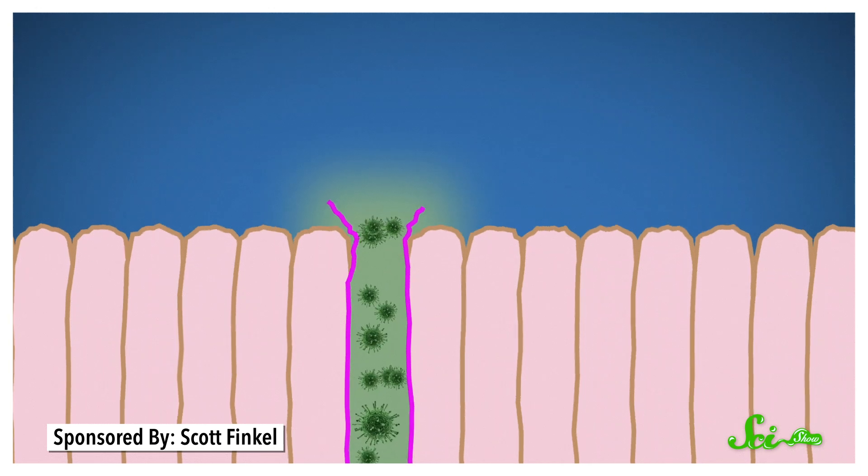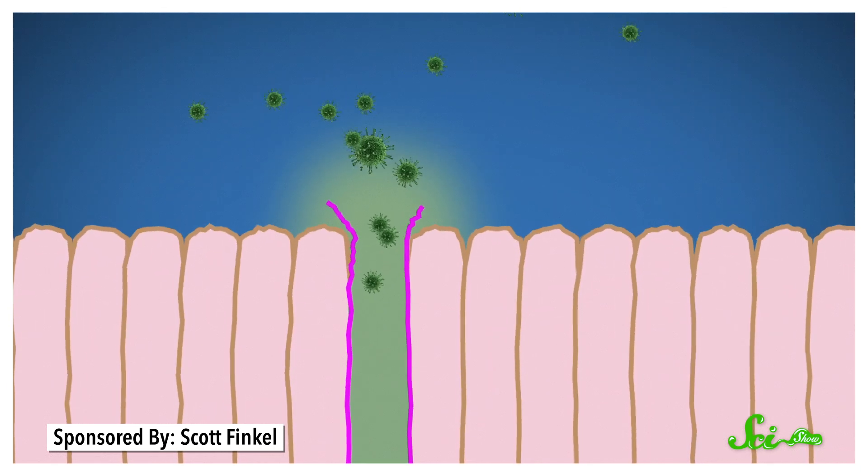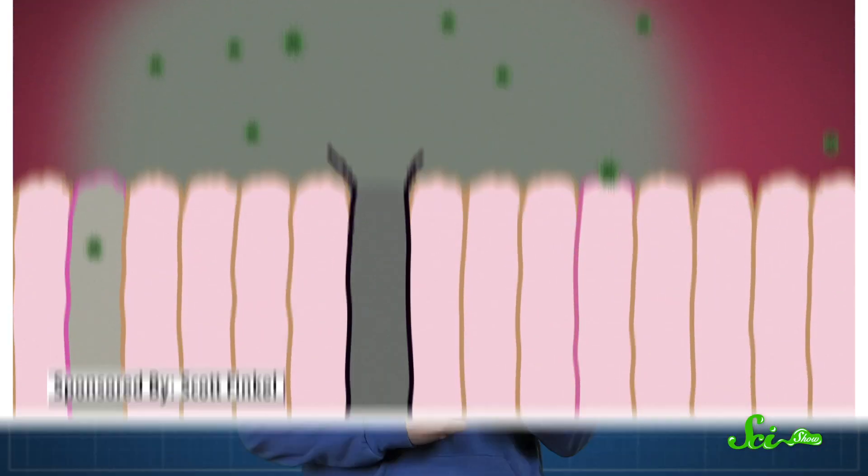Eventually, those virus minions burst from the infected cell to find more victims. And at the same time, your dead and damaged cells release chemicals that trigger an inflammatory response in your body. Nearby blood vessels dilate and leak plasma into the infected tissues, which kicks off the fight against the invaders.